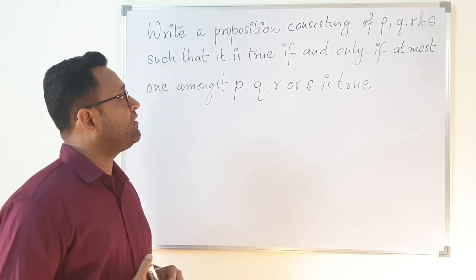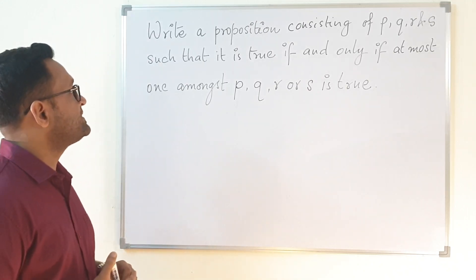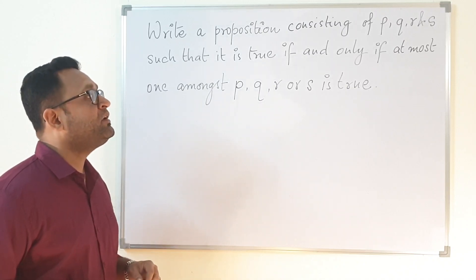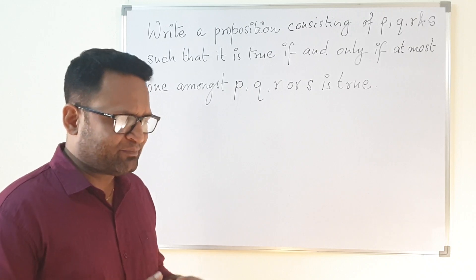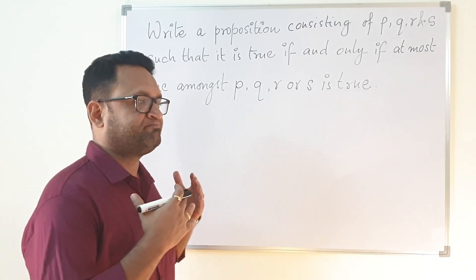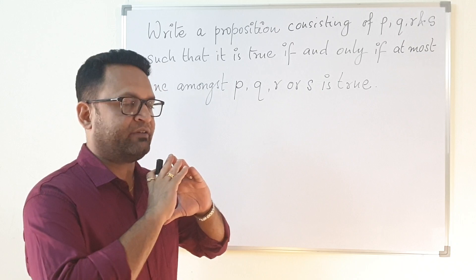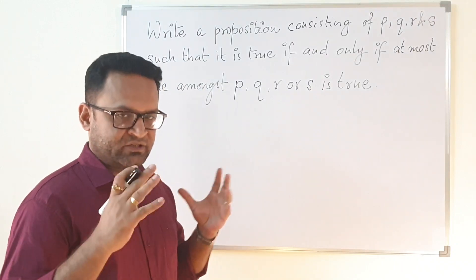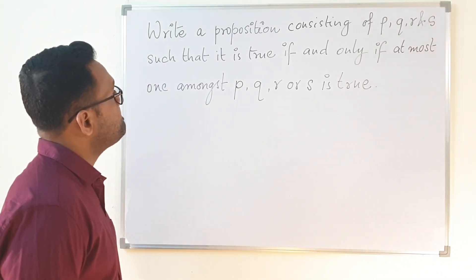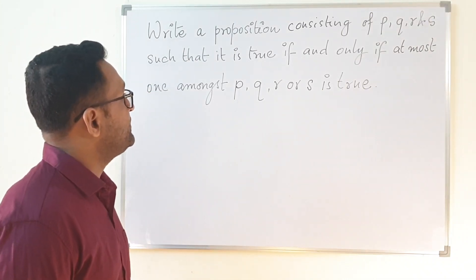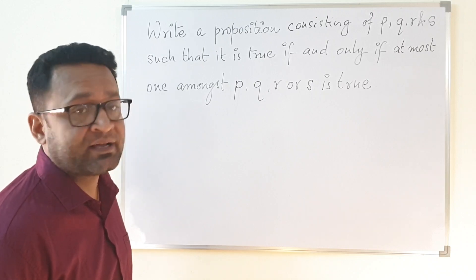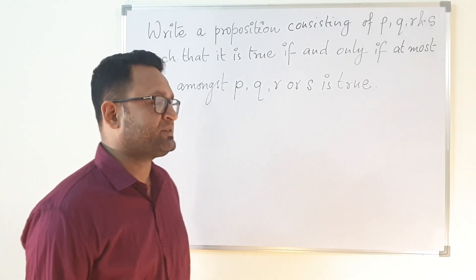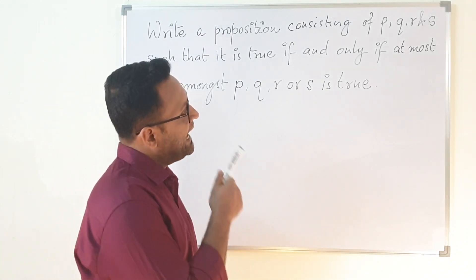The question is: write a proposition consisting of P, Q, R and S such that it is true if and only if at most one amongst P, Q, R or S is true. In simple words, you need to develop a combination of propositions such that it is true if and only if at most one amongst P, Q, R or S is true.